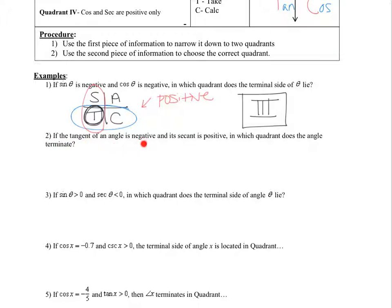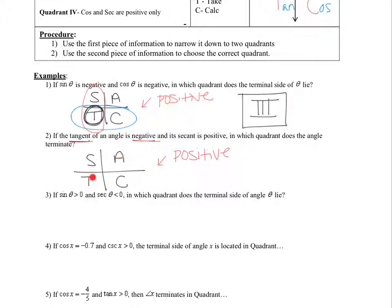Example two: if the tangent of an angle is negative and the secant is positive, in which quadrant does the angle terminate? Again, we draw ASTC. Tangent is negative — this is the chart for positives, so let's find where tangent is positive. Tangent is positive in A and T, so if tangent is positive in those two quadrants, it must be negative in the other two.